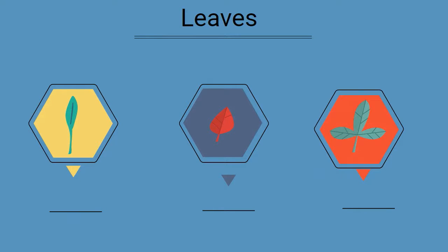Leaves play an important role for the plant because they capture the sun's energy and carry out the food making process of photosynthesis.